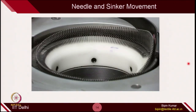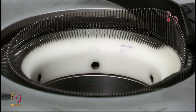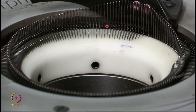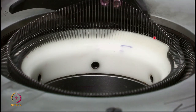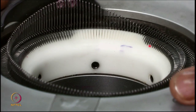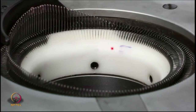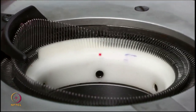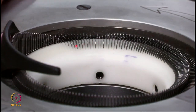Here in slow motion, you can see that once the needle is in the highest position, the sinker is going down. Once the needle is coming down, the sinker is coming out. When the needle is going down, the sinker is coming out and providing the belly platform.